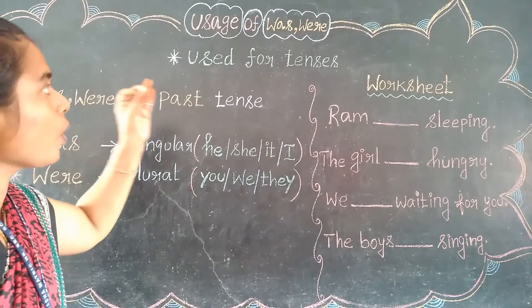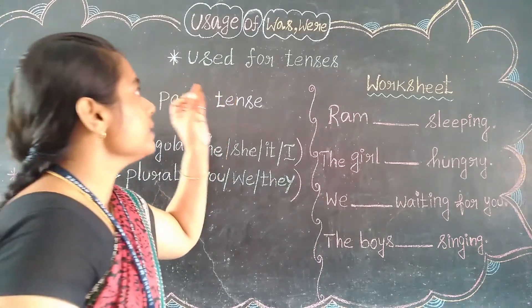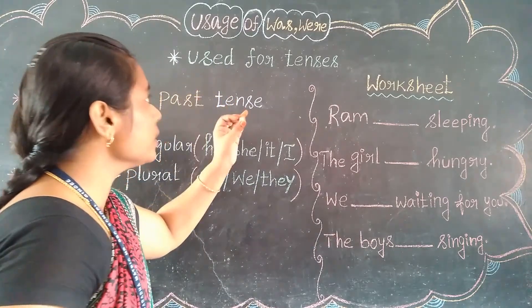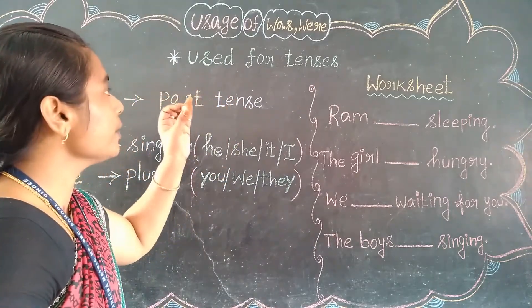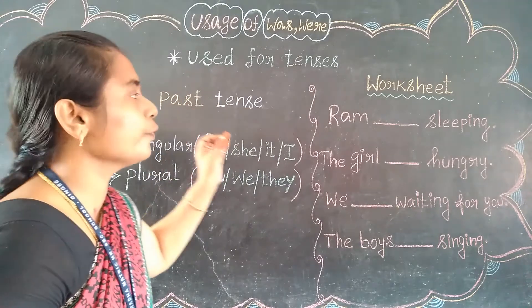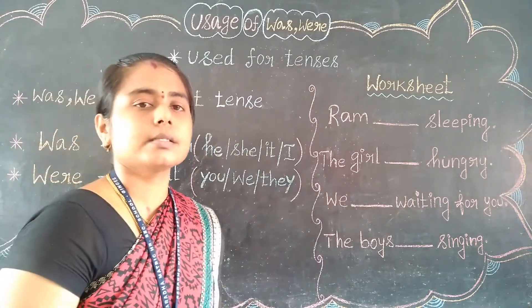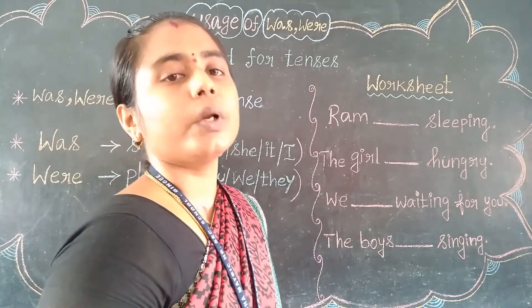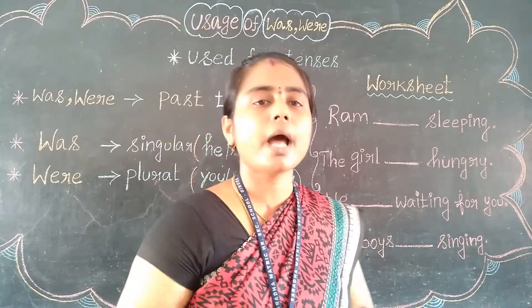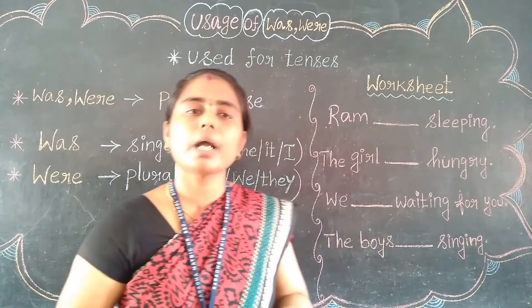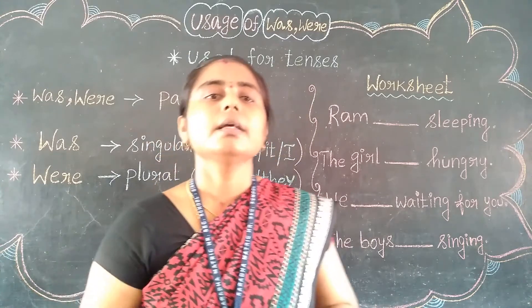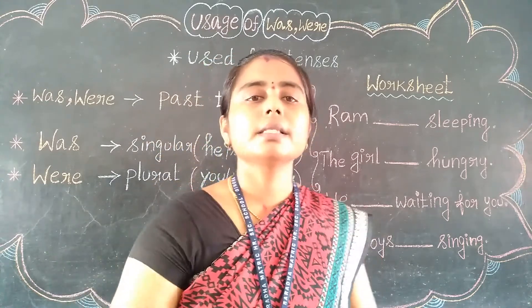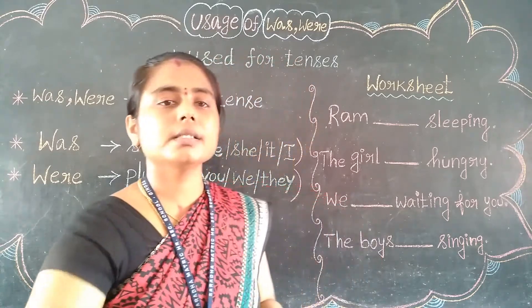Usage of 'was' and 'were'. See, these two words — 'was' and 'were' — are used for tenses. Where? Tenses. So, what are the tenses we have in our English grammar? We have the basic three tenses.